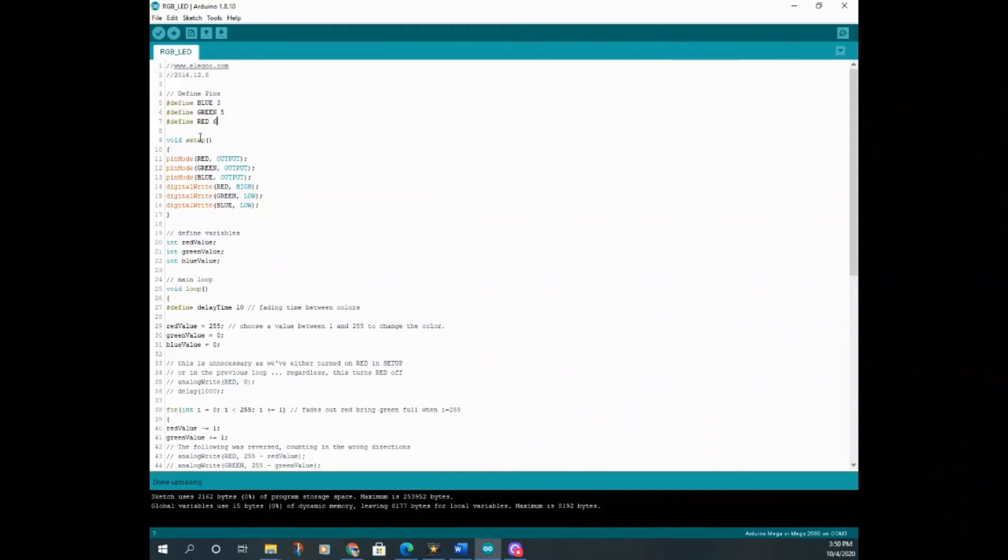So if we come down here to our sketch, this starts by specifying which pins are going to be used for each of the colors. You see blue will be number three, green will be number five, and six will be for red. And then you come down here, the next step. This will run one time once your sketch is uploaded to your board. And in this case, it just defines the three pins that we're using as being outputs, as you can see right here.